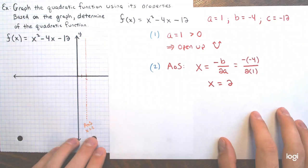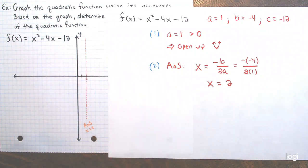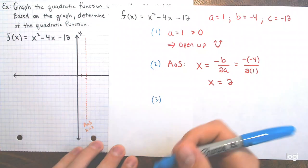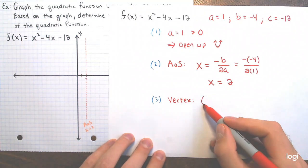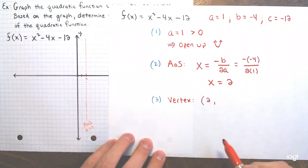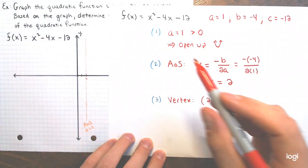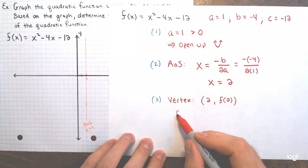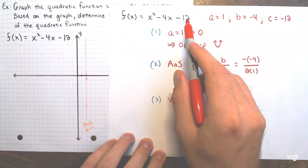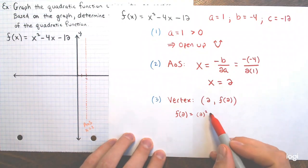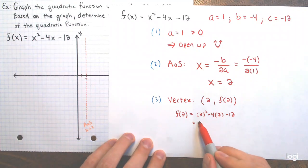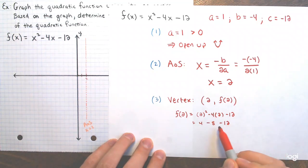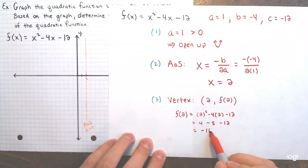Step three, the vertex. The x-coordinate is 2, so I need f(2): that's 2 squared minus 4 times 2 minus 12, which equals 4 minus 8 minus 12, giving negative 16. So the vertex is at the point (2, negative 16).